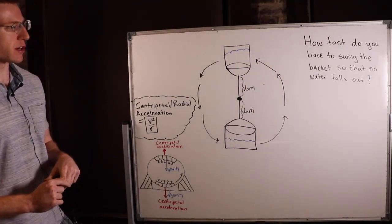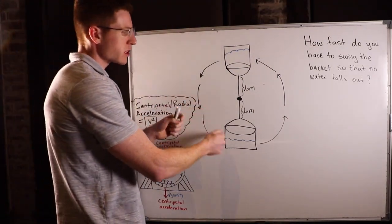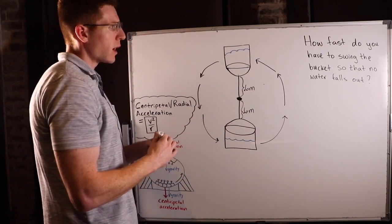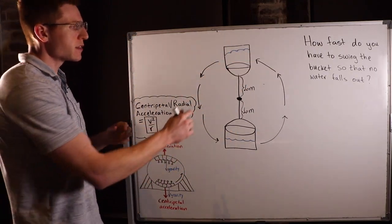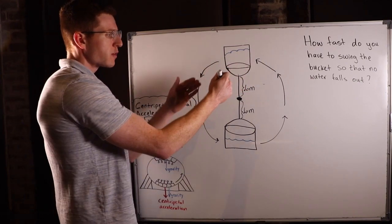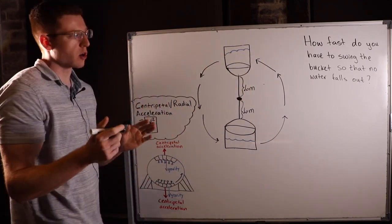Hey guys, I've got a problem for us here involving a bucket of water swinging in a circle. I want to know how fast do you have to swing this bucket so that at the top, when the bucket is perfectly upside down, no water falls out.